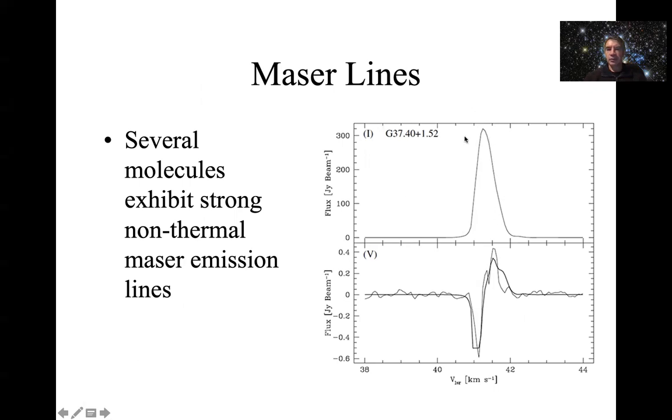You get very very strong lines, hundreds of thousands of janskys even. In this example again we've got this Zeeman effect going on, so we can measure the magnetic field that way as well. Much more about masers in the next lecture.